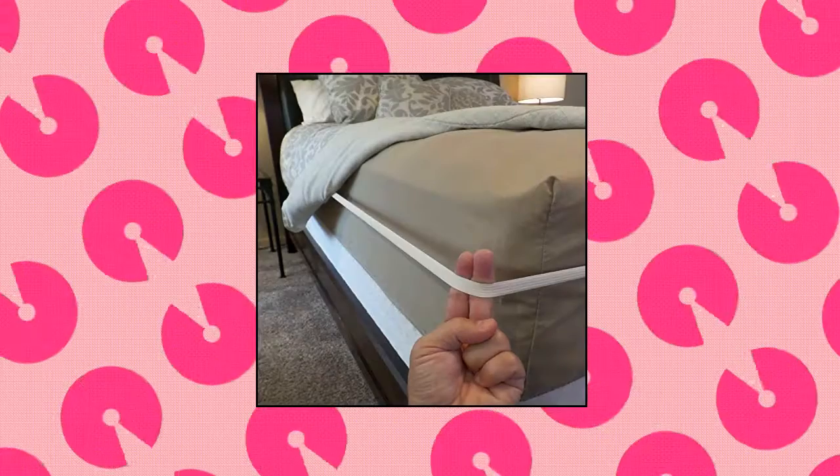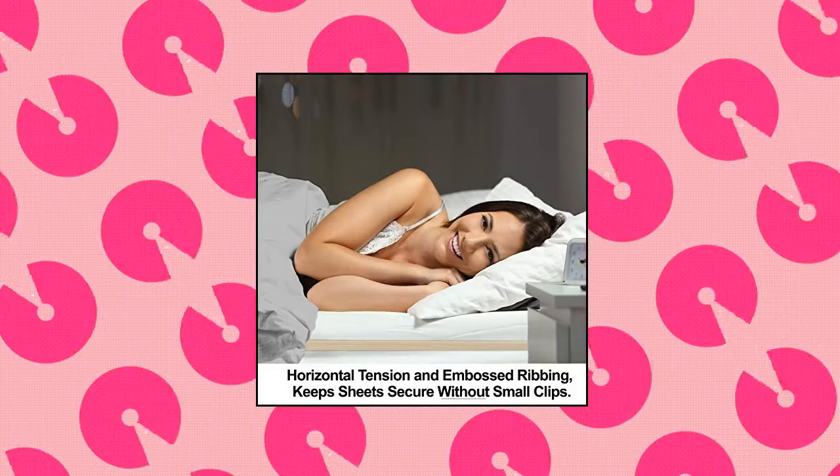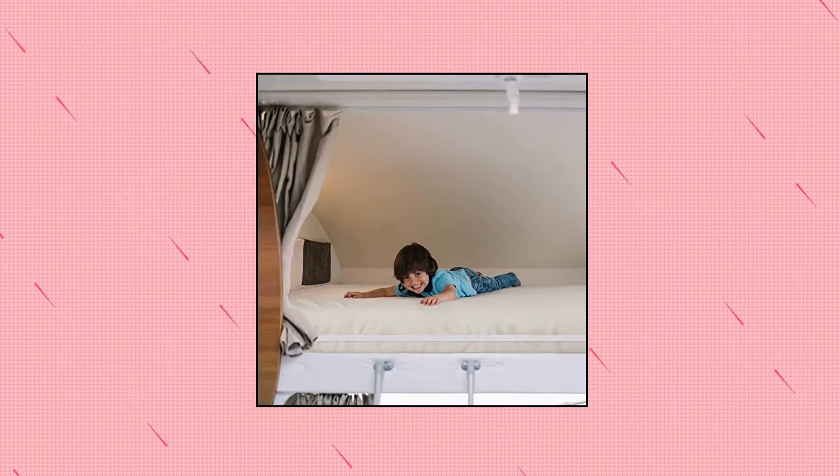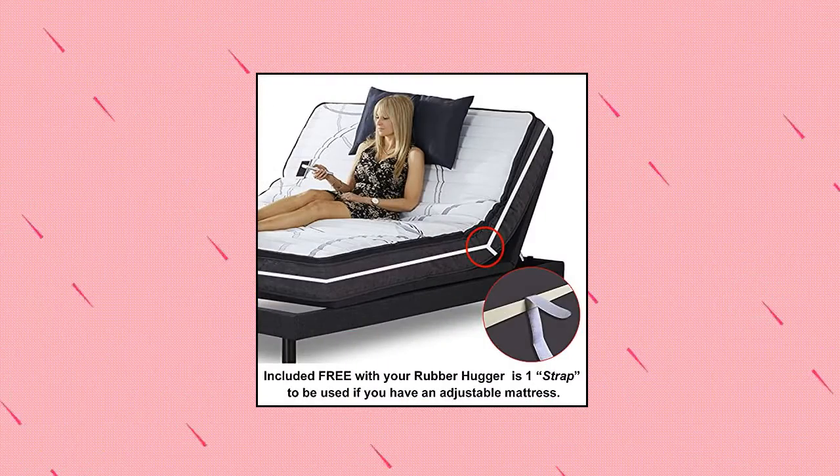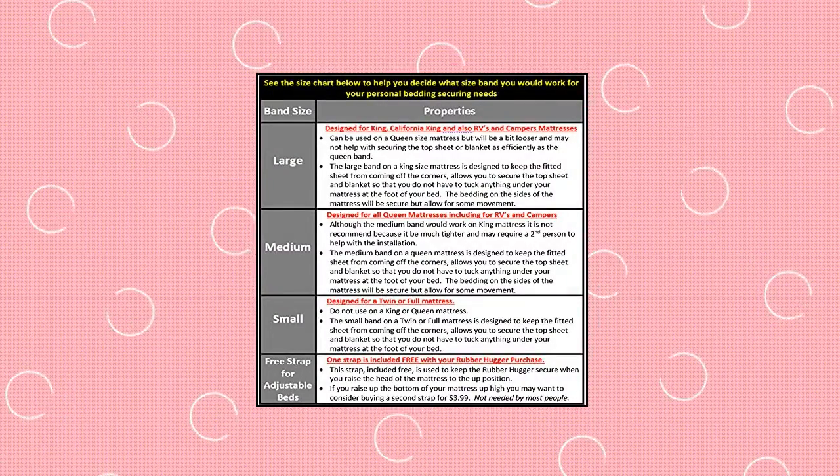Rubber Hugger Bed Sheets Holder Band, Hassle-Free and Practical Approach. The mattress band was designed as a hassle-free way to keep your bottom-fitted sheet from riding up off the corner and hold sheets on the bed. More practical and easier to install than sheet suspenders, sheet clips or sheet straps that go under your mattress.